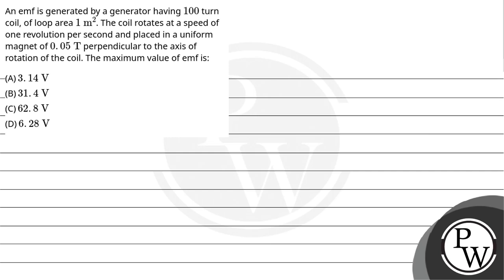Hello, let's read the question. An EMF is generated by a generator having a 100-turn coil of loop area 1 meter square. The coil rotates at the speed of one revolution per second and is placed in a uniform magnet of 0.05 Tesla perpendicular to the axis of rotation of the coil. The maximum value of EMF is: option A, 3.14 volt; option B, 31.4 volt; option C, 62.8 volt; and option D, 6.28 volt.